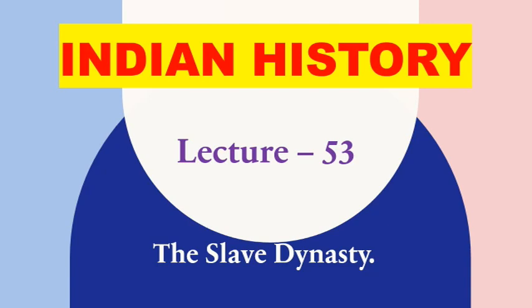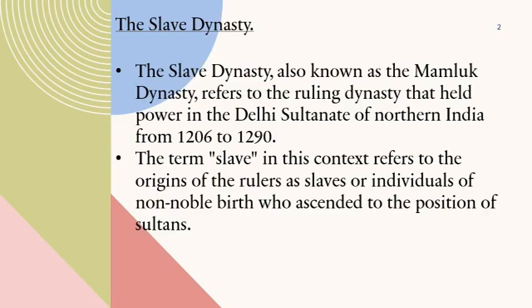The Slave Dynasty, also known as the Mamluk Dynasty, refers to the ruling dynasty that held power in the Delhi Sultanate of northern India from 1206 to 1290. The term 'slave' in this context refers to the origins of the rulers as slaves or individuals of non-noble birth who ascended to the position of sultans.